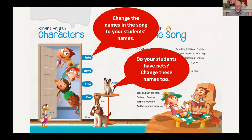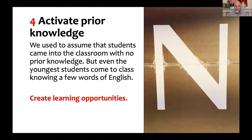Number four: activate prior knowledge. We used to assume students came into a classroom with no prior knowledge. But even the youngest students come to class knowing at least a few words of English. We have to create learning opportunities from that. This is similar to the first idea — finding out what else students know. In an activity like this, there are opportunities to review colors, numbers, even the time on the clock.